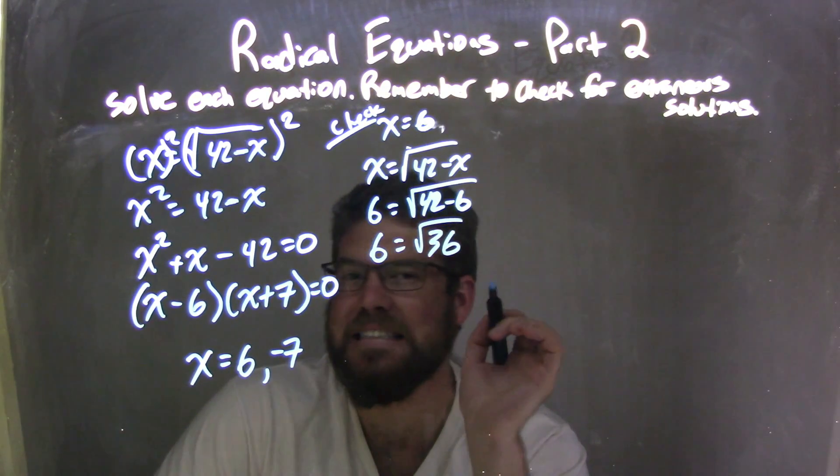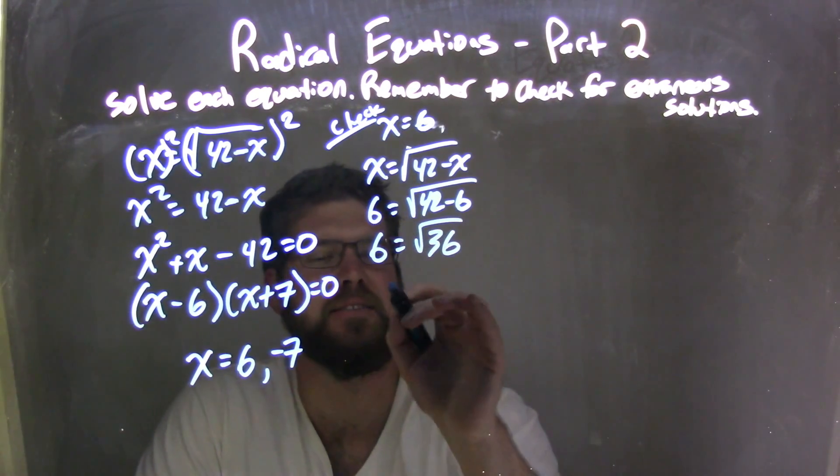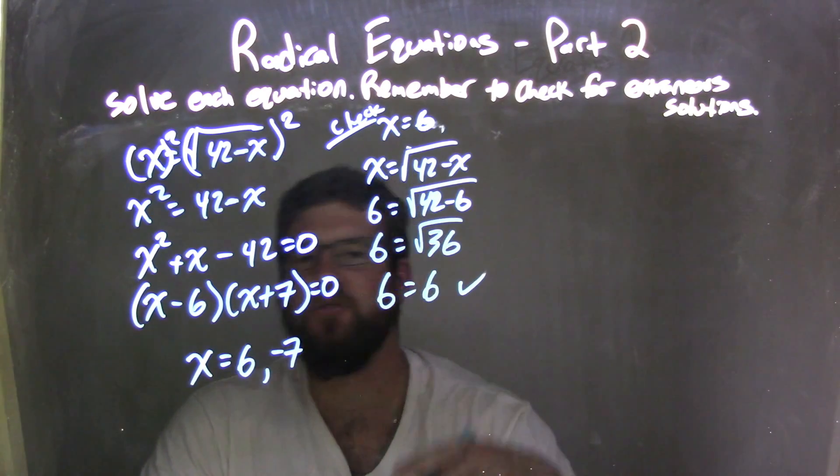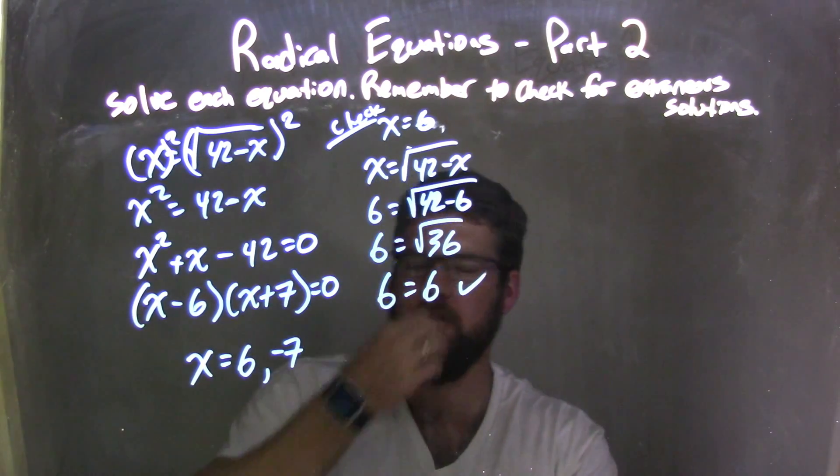The square root of 36 is 6, so 6 does equal 6. That is a true statement. x equals 6 is a real solution.